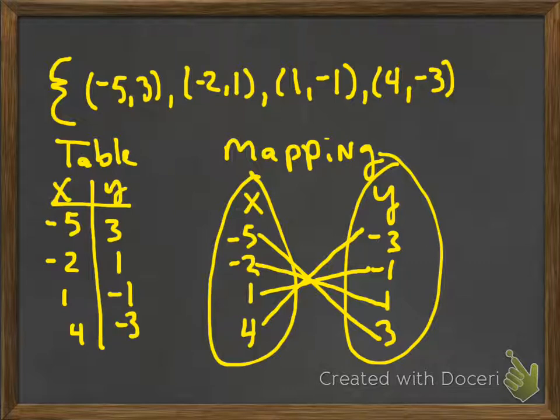And I can also represent this with a graph. So here's me plotting the points for the graph. All I did there was plot negative 5, 3, negative 2, 1, 1, negative 1, 4, negative 3. So those are just those points plotted. If you have any questions on those, please make sure to ask me later about that.